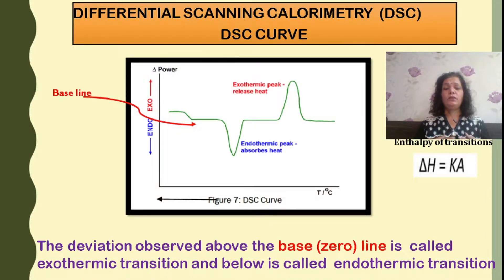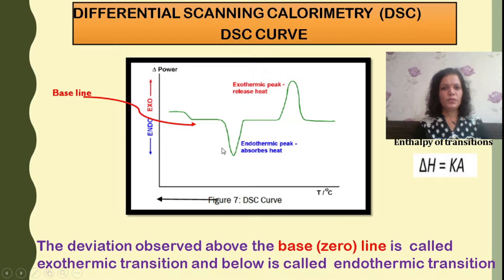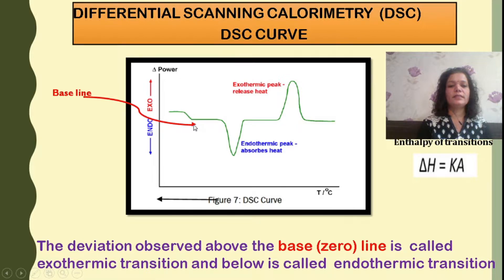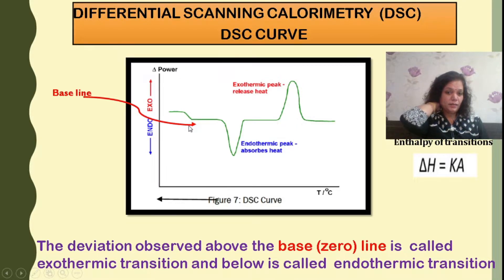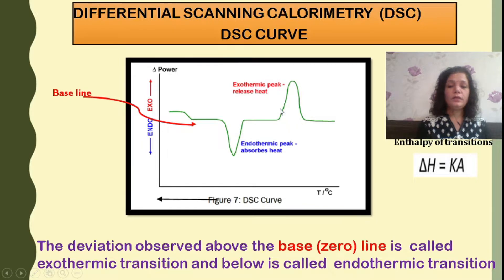The DSC curve is obtained as heat flux versus time or temperature. The typical DSC curve is quite similar to DTA, with a baseline or zero line where sample and reference are initially kept at the same temperature. An exothermic peak is observed when heat is released by the system, and an endothermic peak when heat is absorbed by the system. These transitions are typically observed with respect to the DSC curve.